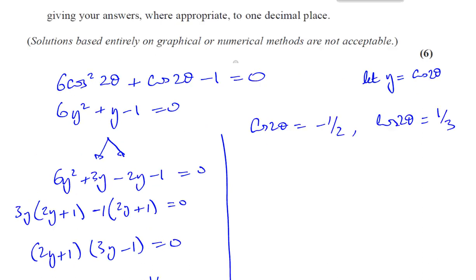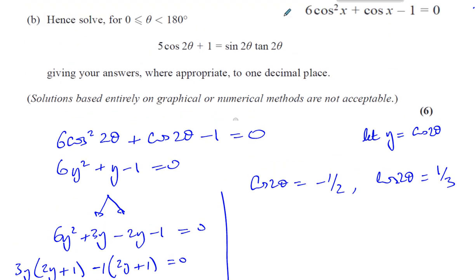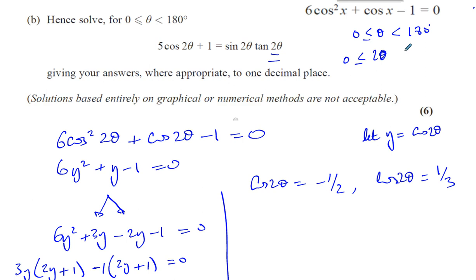Now we've got to go back to our limits. The question gives θ between 0 and 180 (not including 180). We have to change this so it matches the angle we've got — we've got 2θ. So we multiply the limits by 2: the 0 stays 0, but 180 becomes 360. That means we need to find all angles between 0 and 360 for cos(2θ) = -1/2.